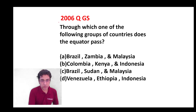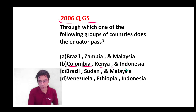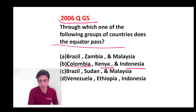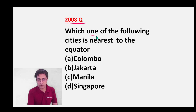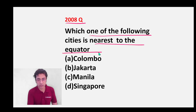Let us look at the question from 2006. The answer is Colombia, Kenya, and Indonesia. We have just seen this — the equator passes through these three countries. Now look at the question from 2008: which one of the following cities is nearest to the equator? Can you guess for a while?